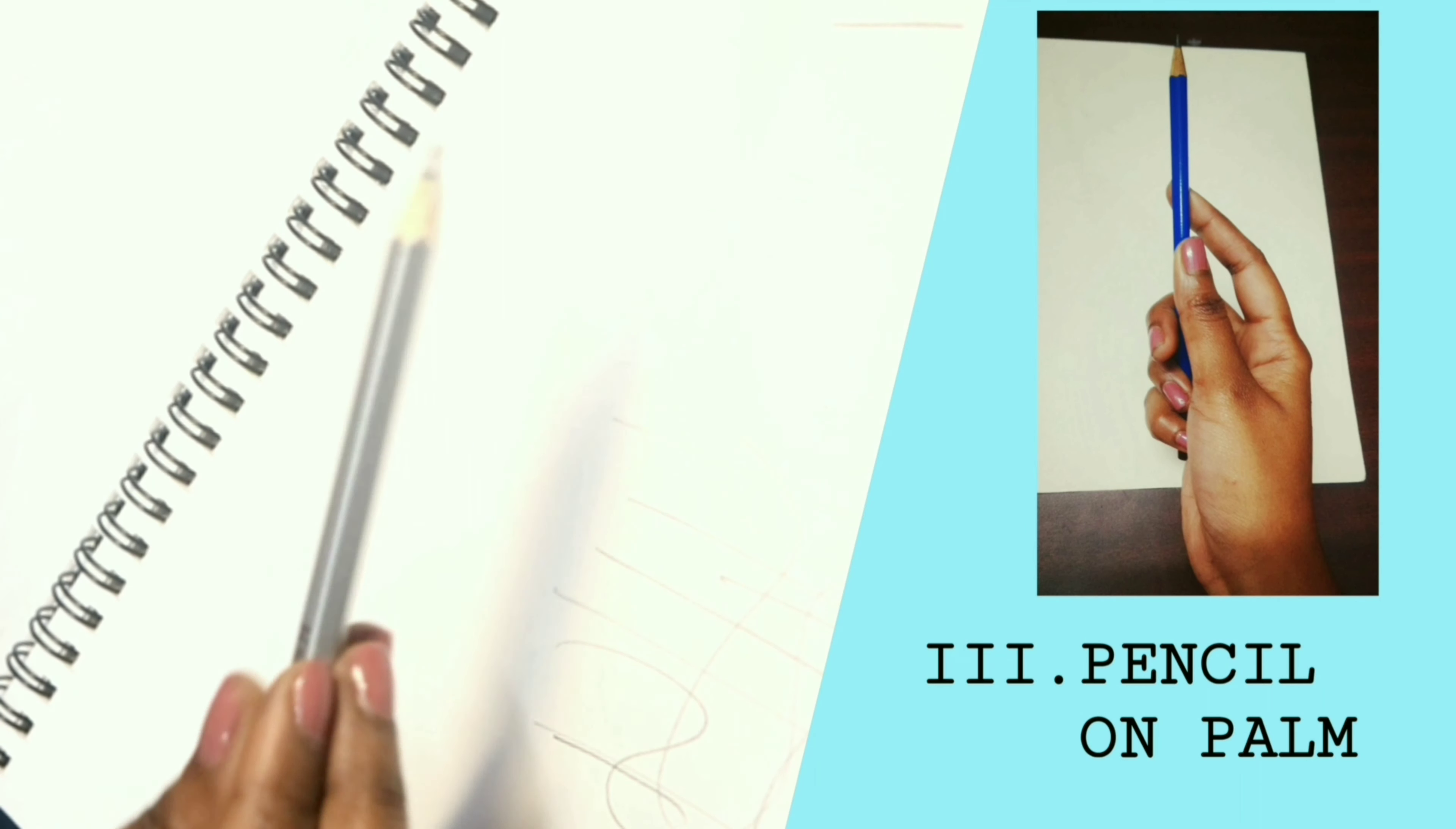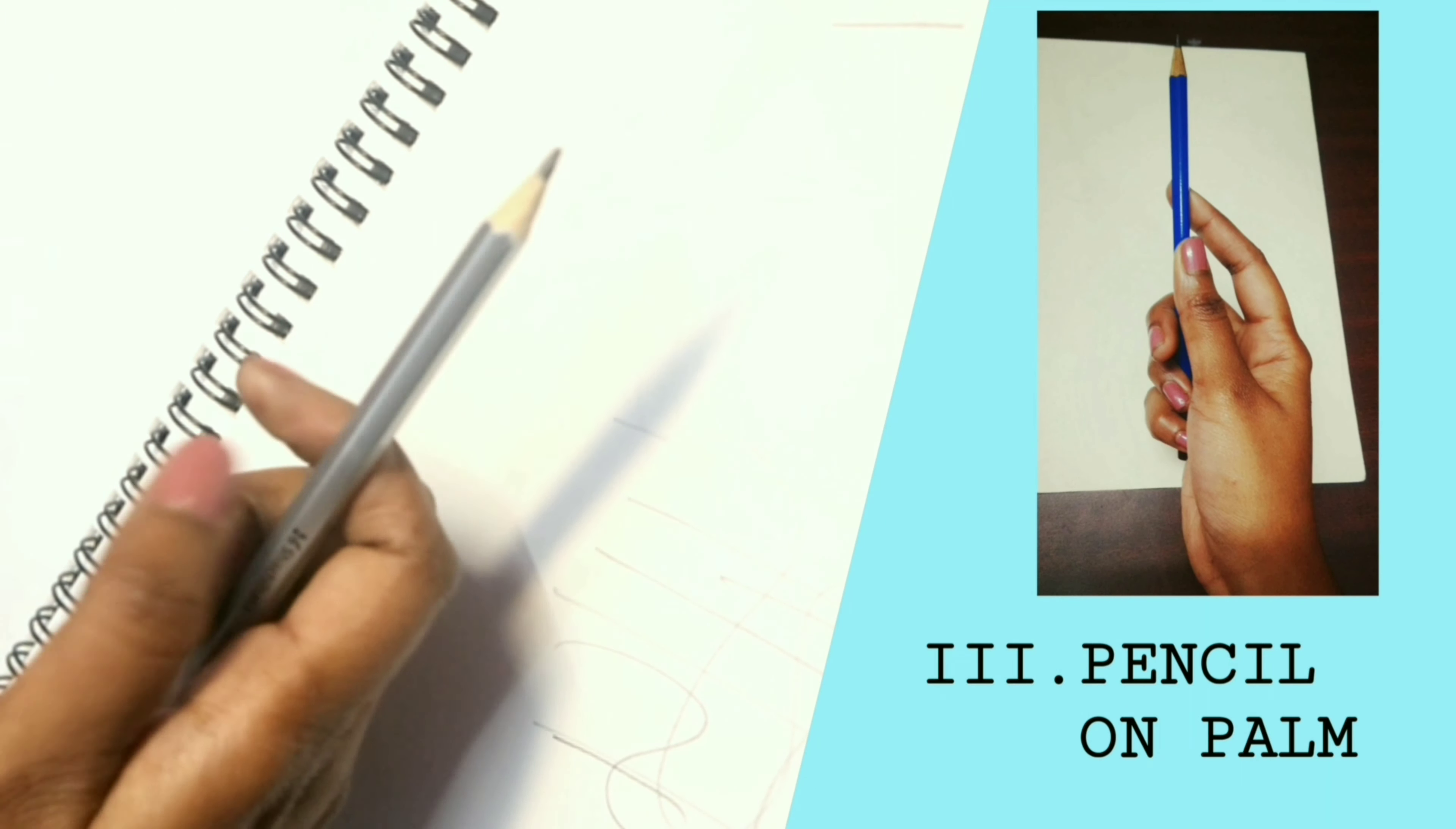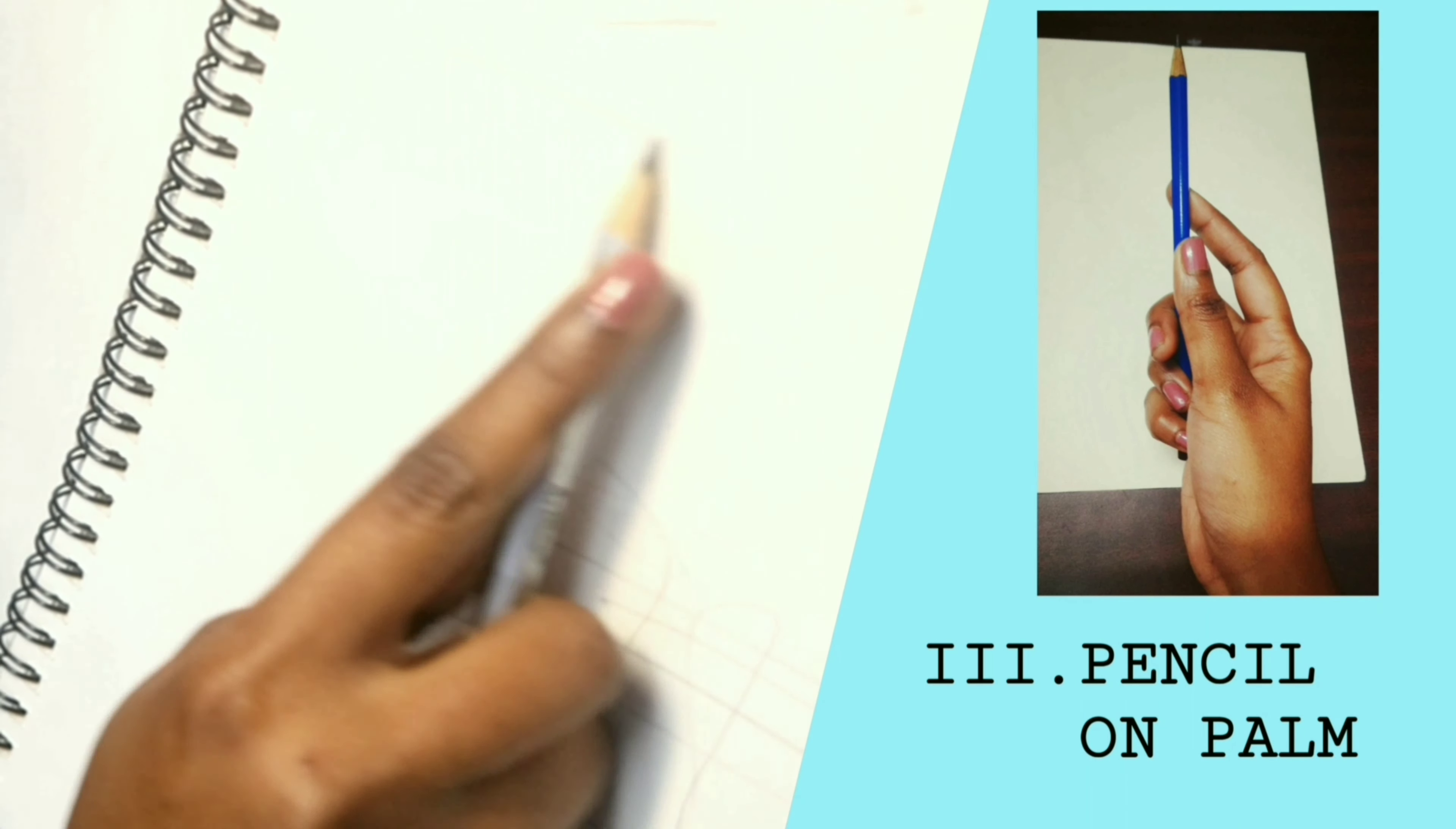The next style is pencil and palm, I call it. It's the modified overhand grip style. Here we hold the pencil like this, hold the pencil vertically for drawing. We can use the shoulder movement or we can work freely on slanted or vertical easel.